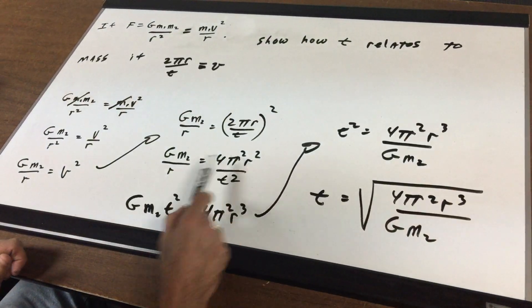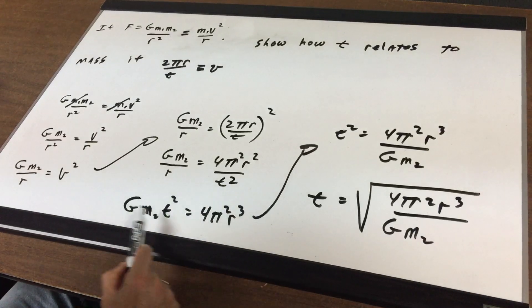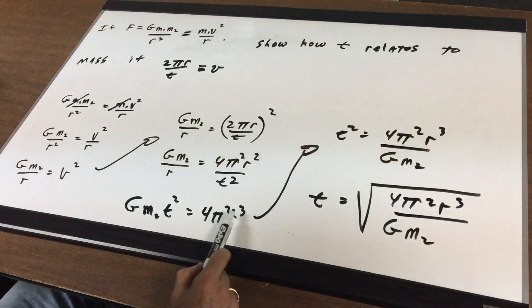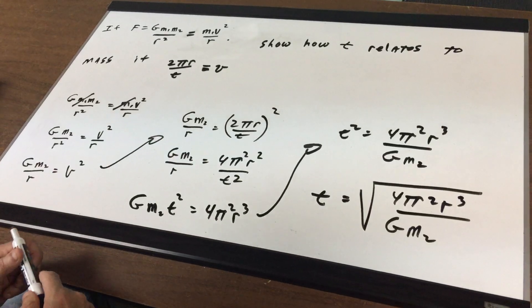I then cross multiply and I get g m2 t squared is 4 pi squared and r times r squared is r cubed.